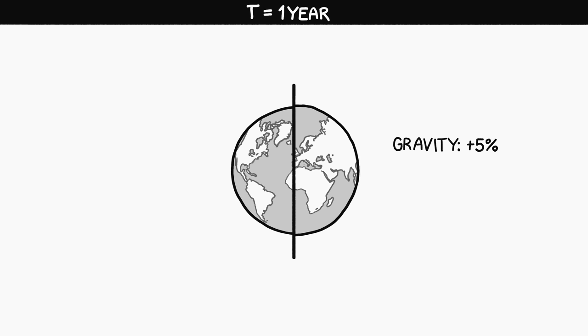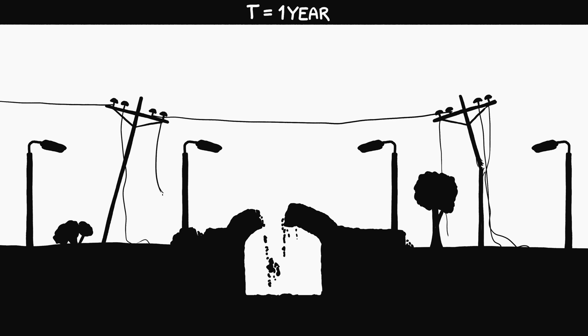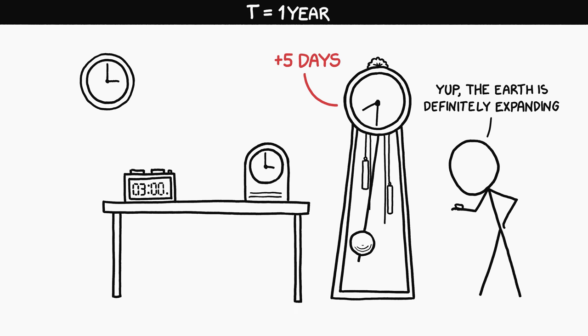After a year, gravity would be 5 percent stronger, and the ground underneath structures would have expanded by 5 percent. You would probably notice the weight gain, and you would definitely notice the failure of roads, bridges, power lines, satellites, and undersea cables. Your pendulum clock would now be ahead by five days.